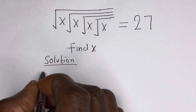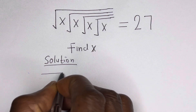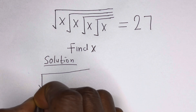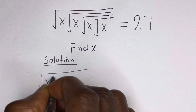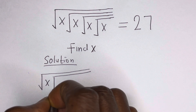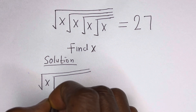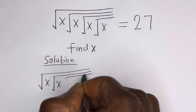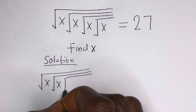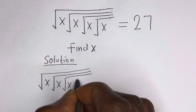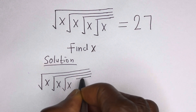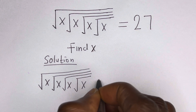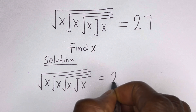Here we have square root of X, and square root of X, and another square root of X. Then lastly, square root of X is equal to 27.